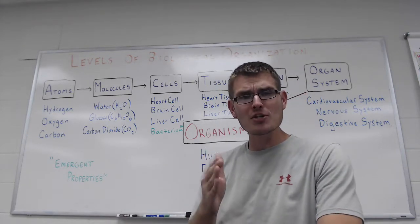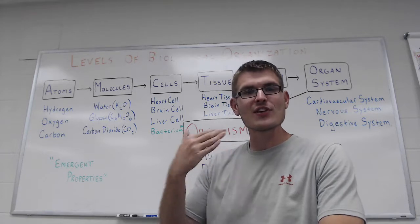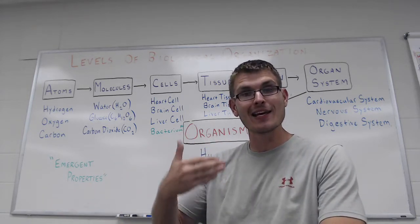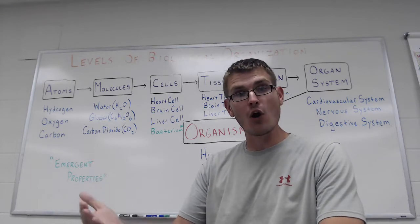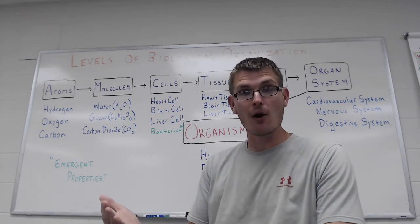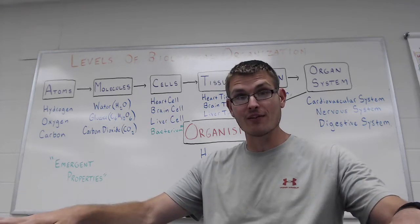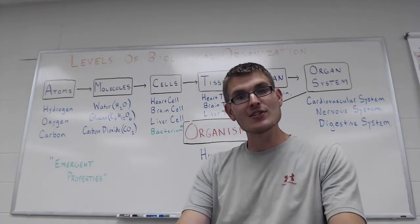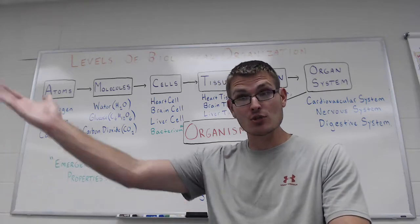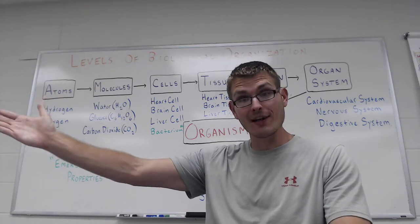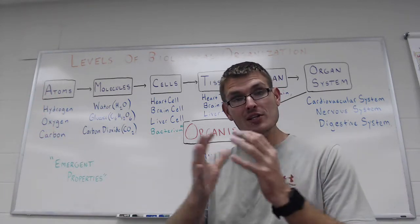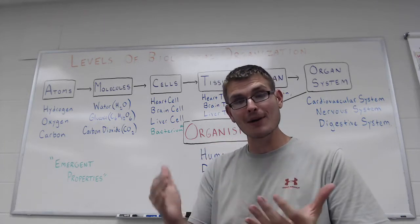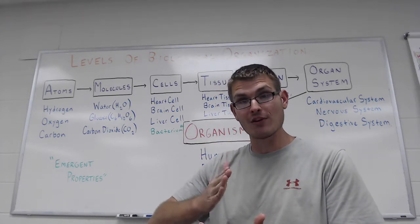So an emergent property basically means the whole is more than the sum of its parts. It's kind of like the example of a car. So if you take a car apart and you have all of the different individual pieces of the car lying around on the ground, those pieces aren't really going to be able to get you to the store or to work. You need all these pieces working together in order to get this emergent property of a car able to drive you from A to B.